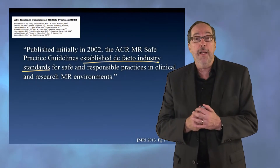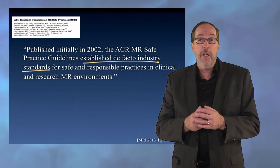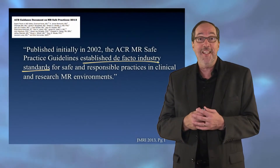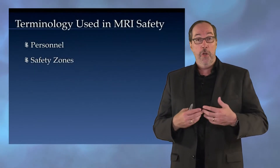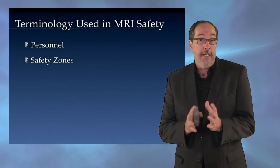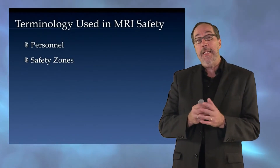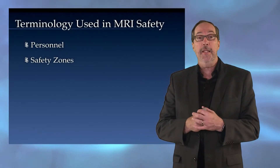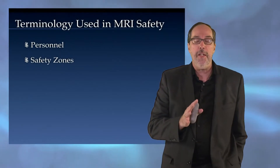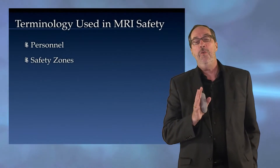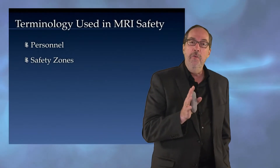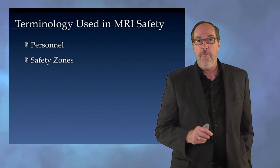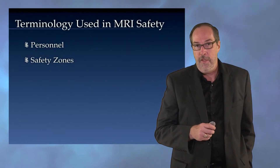The ACR Guidelines specifically talk about two types of personnel. They also refer to things called safety zones. In the first part of this video, we'll look at this terminology as it relates to MRI personnel and the safety zones, which is extremely important to protect those personnel working in MRI, but also, most importantly, our patients.